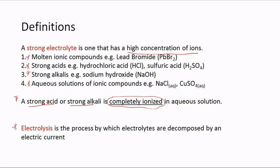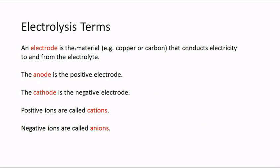You also need to know the definition of electrolysis. Electrolysis is a process by which electrolytes are decomposed by an electric current — make sure you know that definition. An electrode is the material that conducts electricity to and from the electrolyte; that material could be copper or carbon in the form of graphite.